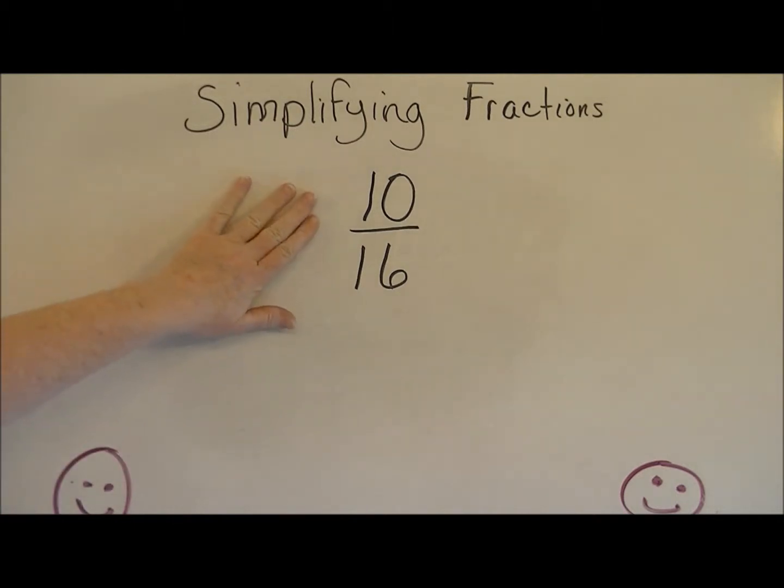Well, I'm going to look a little bit more in detail at the numbers 10 and 16. The first thing I'm going to do is I'm going to write 10 here, and I'm going to think what numbers can I multiply to get the answer of 10? What factors? 1 times 10 and 2 times 5.